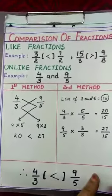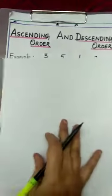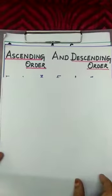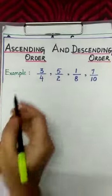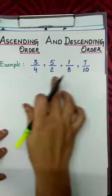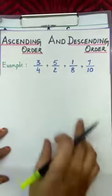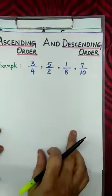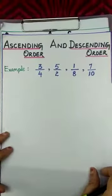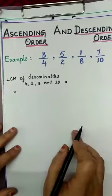Next is ascending order and descending order of fractions. For example: 3/4, 5/2, 1/8, and 7/10. These four fractions are unlike fractions, so before arranging in ascending or descending order, we must convert them into like fractions. For that, we first find the LCM of the denominators: LCM of 4, 2, 8, and 10.